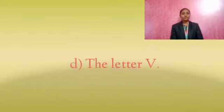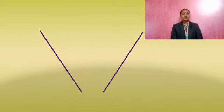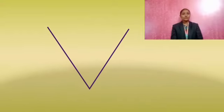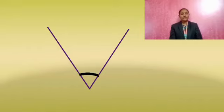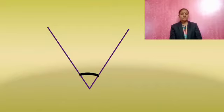Option D: the letter V. These are the two line segments forming letter V. But the angle formed at the intersecting point of these two line segments is less than a right angle, or less than 90 degrees. So it is not a model for perpendicular lines.